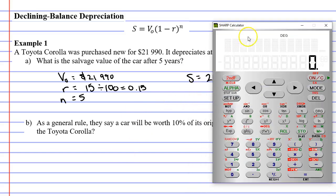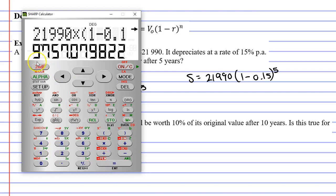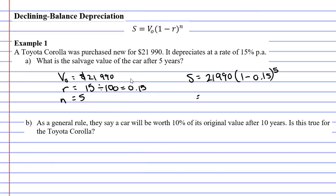I'm going to bring up my calculator and work this out. So $21,990 times bracket, 1 minus 0.15, close the brackets, and we'll put this to the power of five. And it equals $9,757.